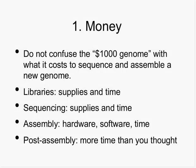Probably the first thing is money. People talk about the $1,000 genome, but one should not confuse that with how much it actually costs to do a new genome — it's going to be more than $1,000. There are associated costs: making your libraries has supplies and time costs, sequencing has supplies and time costs, and the assembly involves hardware, software, and time. After the assembly, there's even more time than you thought. People power costs more than supplies or computers.